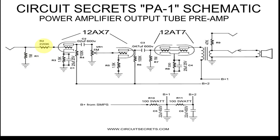R2 is the grid stopper resistor. This resistor acts as a filter to prevent high frequency RF signal from reaching the tube. If you are hearing radio signals from your preamp, a higher resistance value grid stopper may help. This resistor will attenuate some signal and cut some high frequencies, so it is best to use as low a value as possible in your situation.